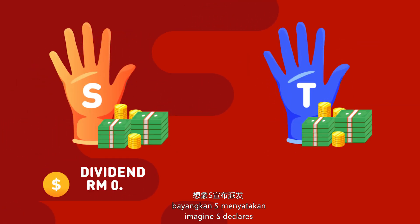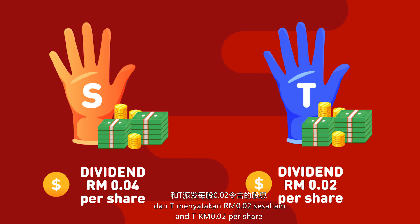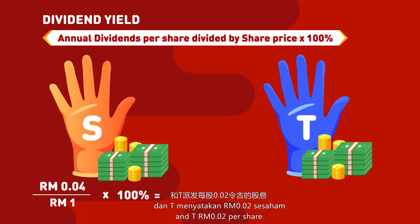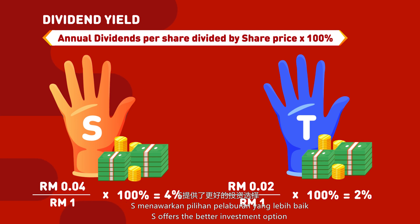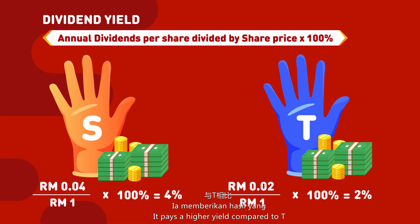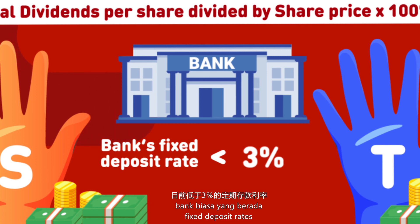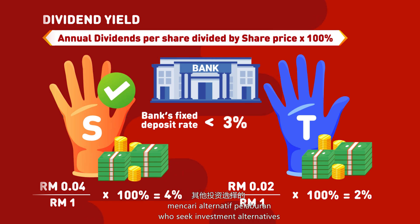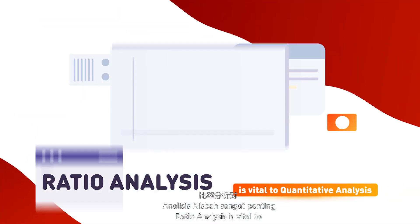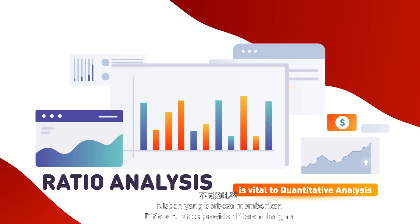Next, imagine S declares a dividend of RM0.04 per share and T RM0.02 per share. Using dividend yield analysis, S offers the better investment option — it pays a higher yield compared to T, as well as to a typical bank's fixed deposit rates, which are currently below three percent. The dividend yield strategy is suitable for passive investors who seek investment alternatives to savings.